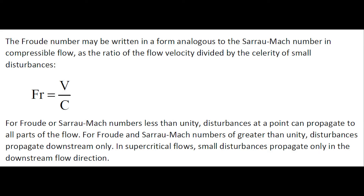The Froude number may be written in a form analogous to the Sarrau-Mach number in compressible flow, as the ratio of the flow velocity to the celerity of a small disturbance. When the Froude or Mach number is less than unity, disturbances can propagate in all parts of the flow. For Froude or Mach number greater than unity, disturbances propagate only in the downstream direction.